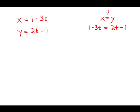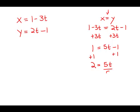Now we can solve for t. I'm going to get the t's on one side. First, I'm going to add 3t to both sides, so I get 1 equals 5t minus 1. Then I'm going to add 1 to both sides to get the 5t by itself: 2 equals 5t. Now I want to get t by itself, so I'll divide both sides by 5, and we get t equals 2 fifths. And this is answer choice D.